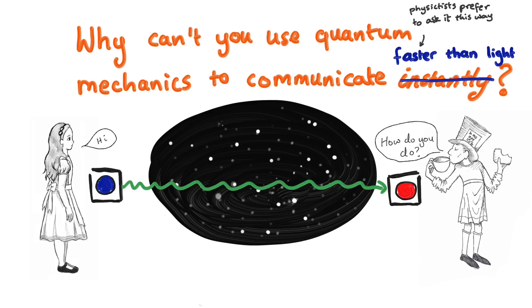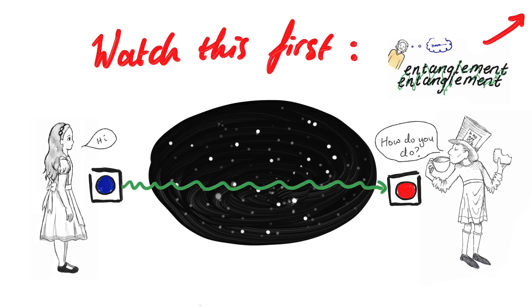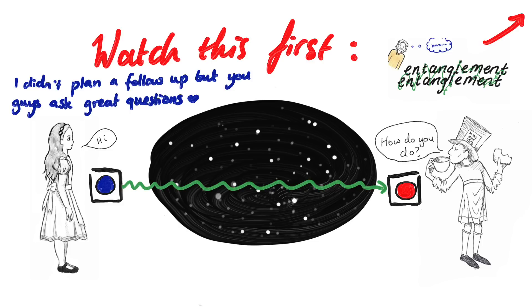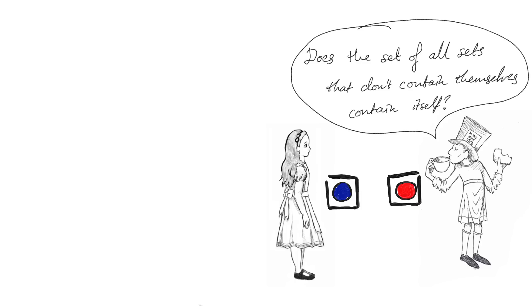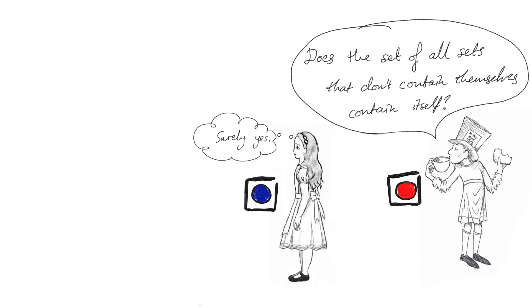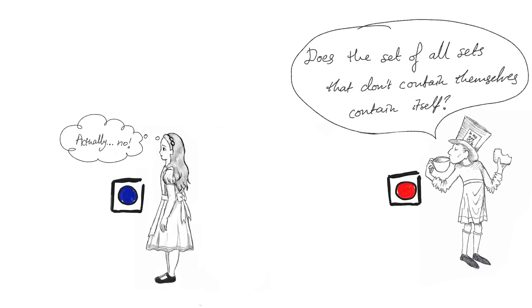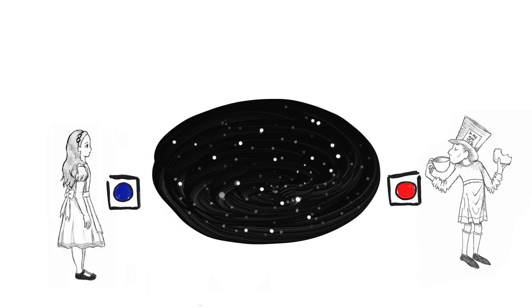This video is very much a sequel to a video I made about entanglement and the EPR paradox. Actually, these videos are all a part of a series on quantum mechanics, so start here if you're new. Let's say Bob wants the answer to a yes or no question that he's asked Alice, but she's waited until she's very far away to think of the answer. However, luckily, they have an entangled pair of particles between them.